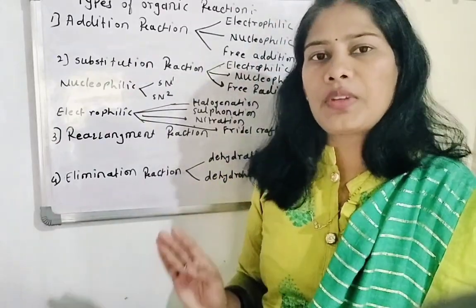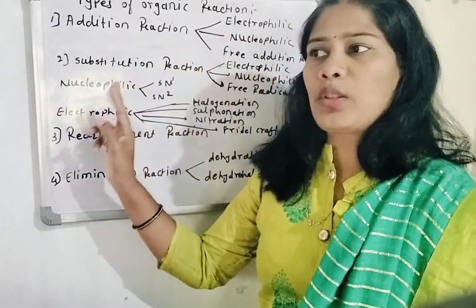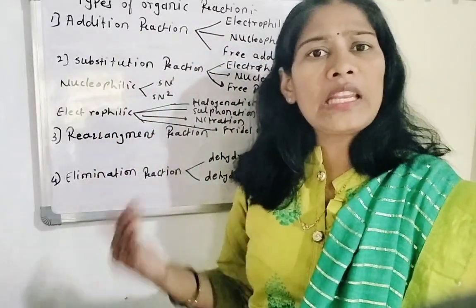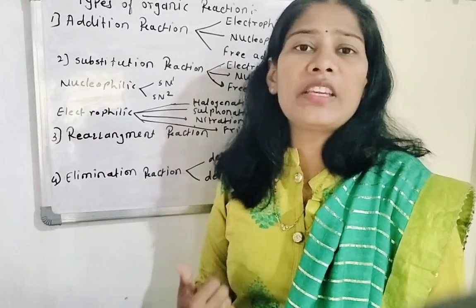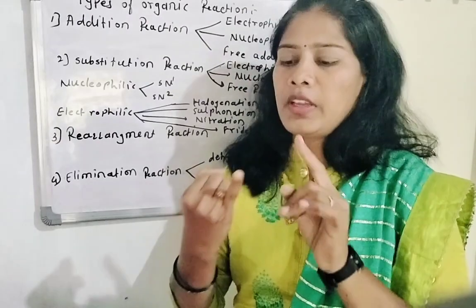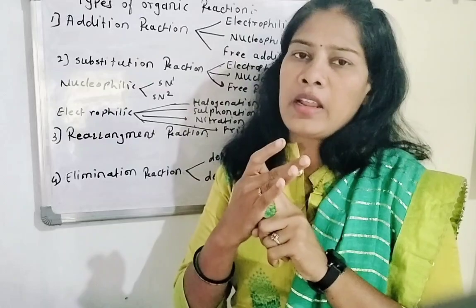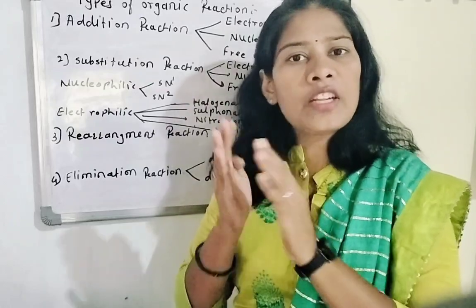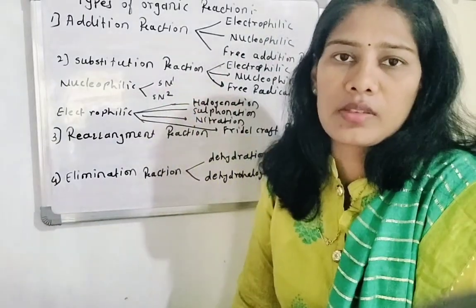The first one is called Addition. Another one is Substitution. Another one is Elimination Reaction. And the fourth one is Rearrangement Reaction. So: Addition, Elimination, Substitution, and Rearrangement Reaction — these are the major four types of chemical reactions.